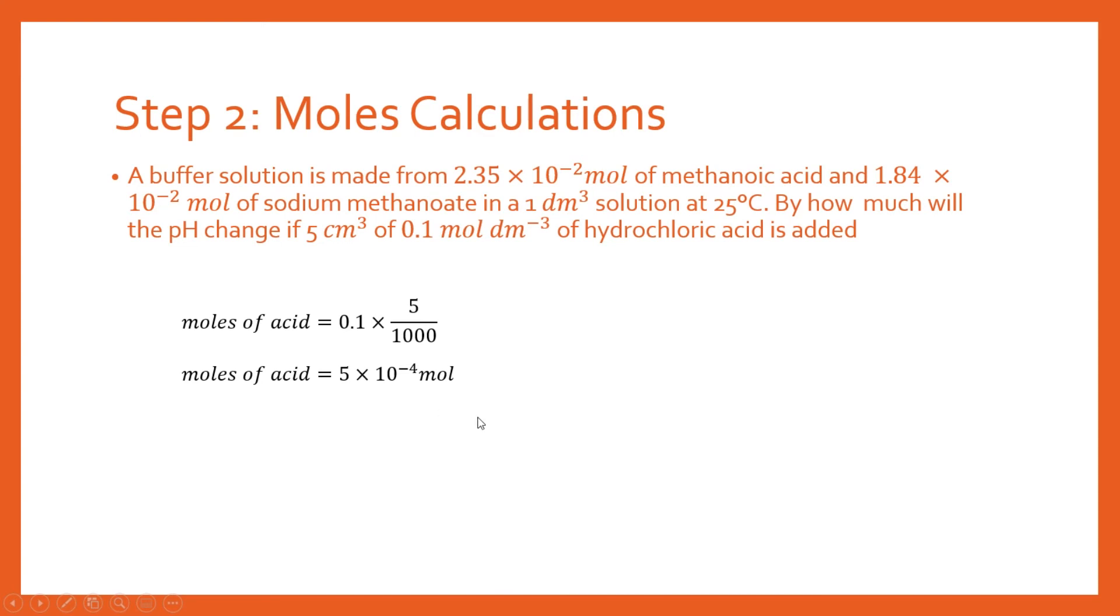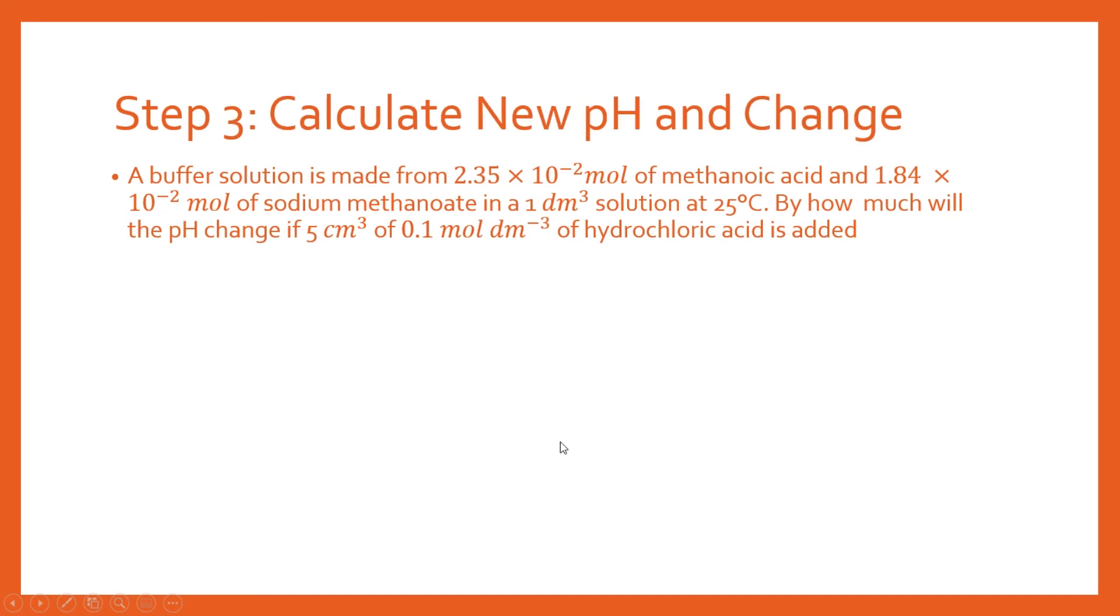So we need to adjust our previous values. So our new concentration of our weak acid, we're going to have to add the moles of acid to that. And then to work out our new conjugate base concentration, we need to subtract the moles of acid, and that gives us this new value here. So we've now got everything we need to be able to calculate our new pH.